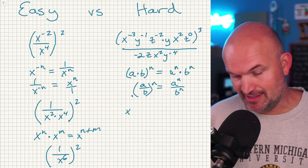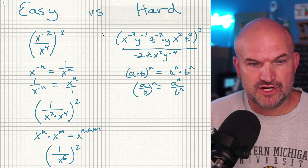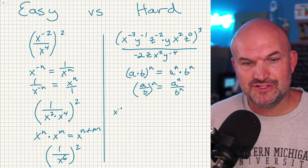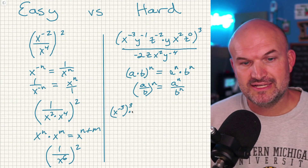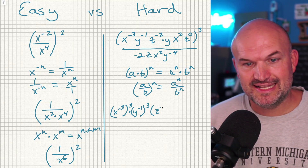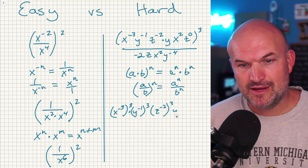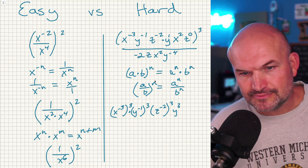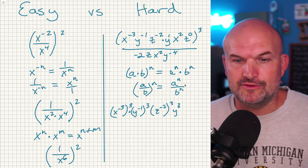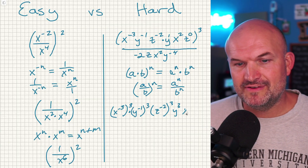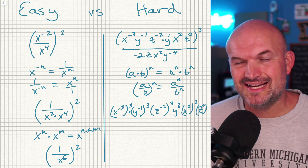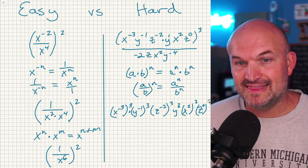So what this is going to look like — bear with me here. This is going to be x to the negative third cubed, times y to the negative first cubed, times z to the negative second cubed, times y cubed. Notice that's a y to the first power cubed, or you can just put a three there. Then I'm going to have x squared cubed, and then z to the zero power, which is just one, and that cubed is still one. I'm not going to do anything with the denominator yet, because I want to figure out what's going to be negative.